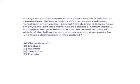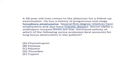So here is a 28-year-old man coming for a follow-up examination. He has a history of progressive end-stage hereditary emphysema — this is the key disease to notice in the case. There are various causes for emphysema, but here we are talking about hereditary emphysema. Several first-degree relatives have emphysema and also have hepatic disease, so both the respiratory and hepatic systems are involved.